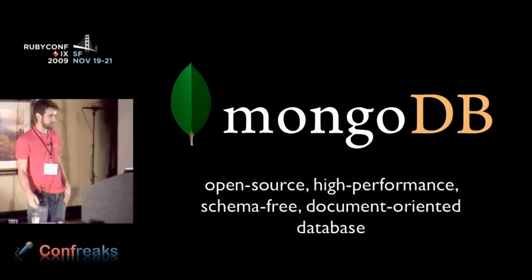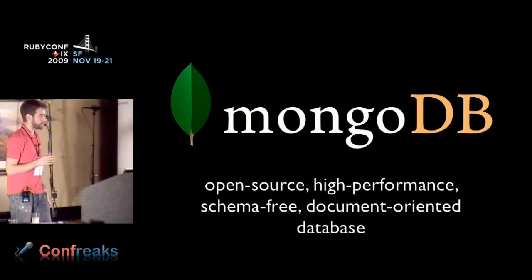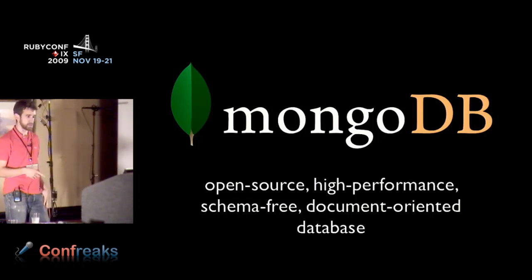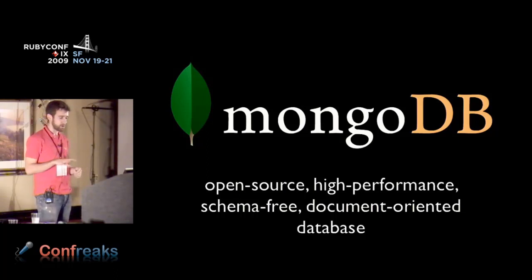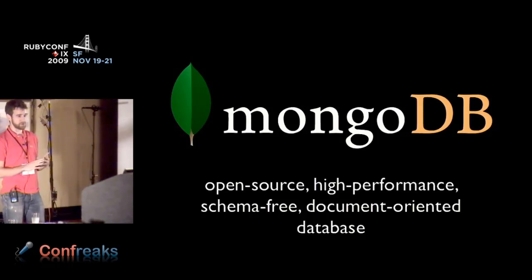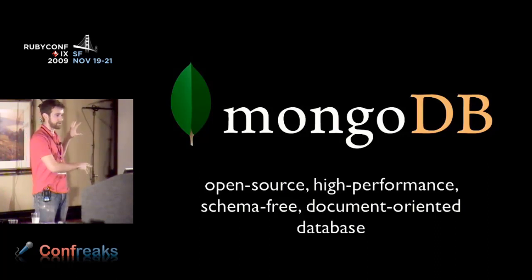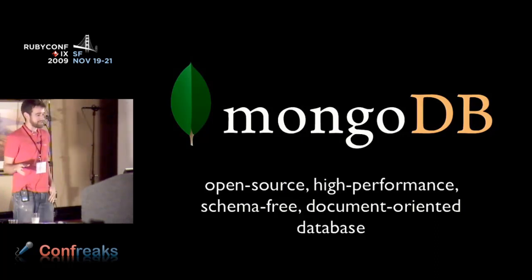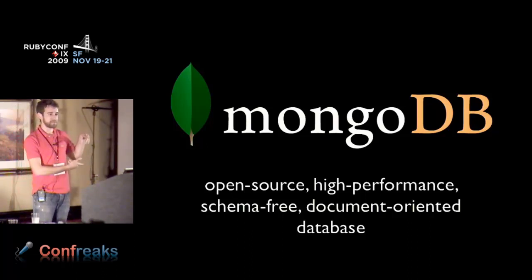I'm Mike. I work for TenGen. TenGen is a startup company in New York and we sponsor the development of MongoDB. For those of you who aren't familiar with MongoDB, it is an open-source, high-performance, schema-free, document-oriented database. Hopefully by the end of the talk I'll have given you guys an idea of why these traits combine to make something that should be interesting to you.